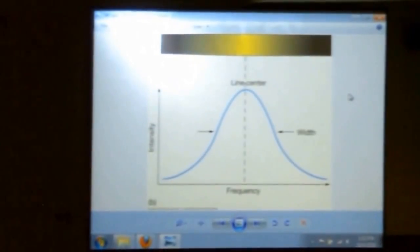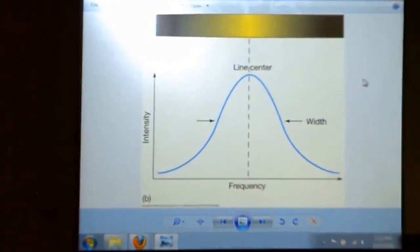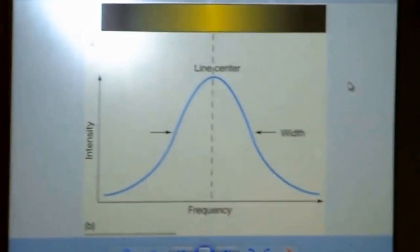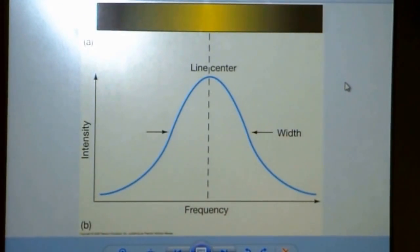One way that we can use the Doppler effect is to just get the line of sight velocity, how quickly something is moving towards us or away from us. The other way we can use it is looking at line widths.